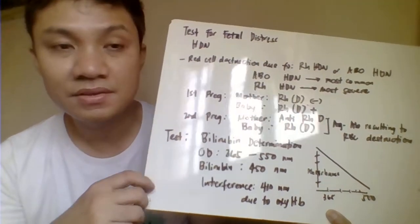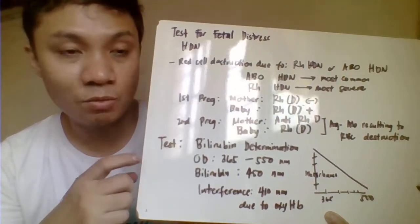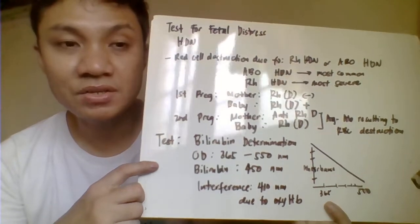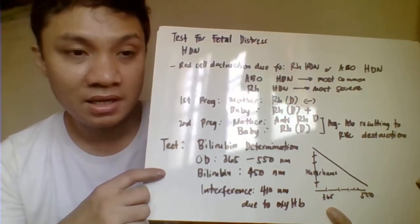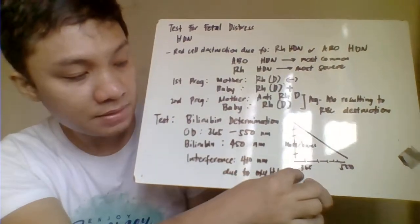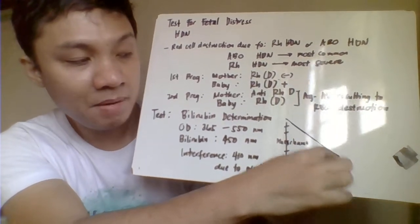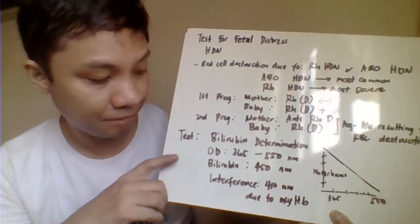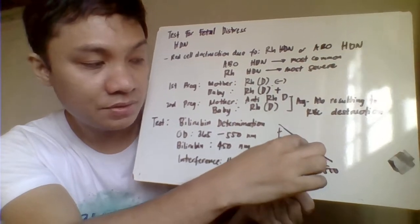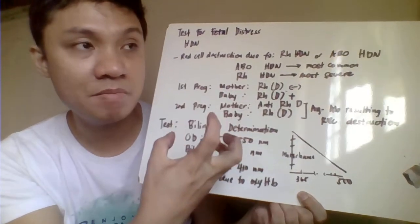For assessment of fetal distress related to hemolytic disease of the newborn, we can test by measuring bilirubin concentration. In bilirubin determination, we measure the bilirubin concentration at a wavelength from 365 to 550 nanometers. Normally at 365 nm the absorbance is relatively high, and at 550 nm the absorbance is low. Bilirubin falls between 365 and 450 nm. Normally, bilirubin should be low when there is no red cell destruction.